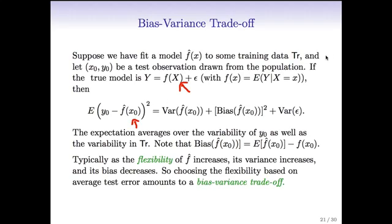Let's look at the expected prediction error: E[(y0 - f-hat(x0))^2]. This expectation averages over the variability of the new y0 as well as the variability that went into the training set used to build f-hat. It turns out we can break up this expression into three pieces exactly.